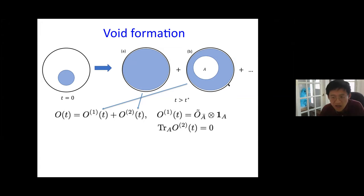This void formation term — exponentially small at early times but dominant after the Page time — is precisely the part calculated by the replica wormhole by Penington, Shenker, Stanford, and Yang, who get the exact behavior from replica wormholes. If you drop the void formation part, what you get is just Hawking's calculation: the radiation is given by the coarse-grained entropy for the radiation.